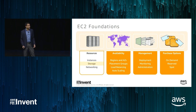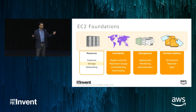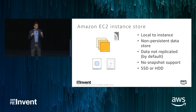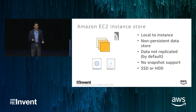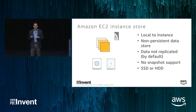EC2 is not just about instances — it's about the resources you use in conjunction with them. The most common is storage. Many instances have instance storage — the D and I families — with SSD and magnetic variants. These are local to your instance, non-persistent by default, not replicated, with no default backup. You manage those aspects yourself, just like local storage on a server in your own data center.